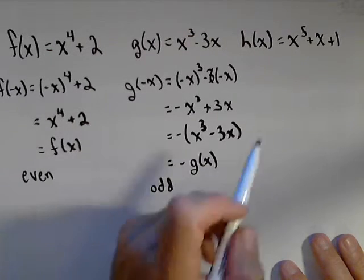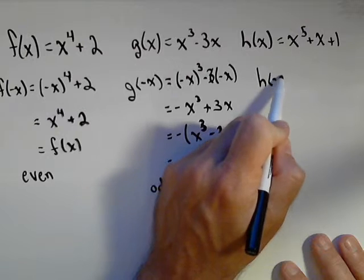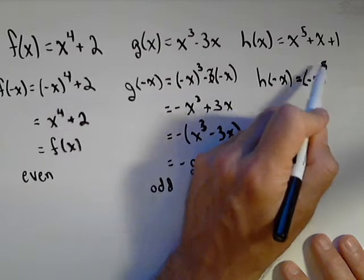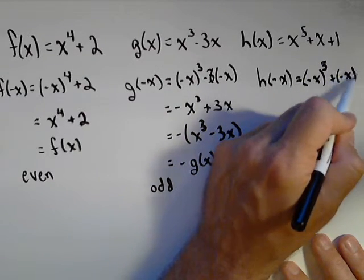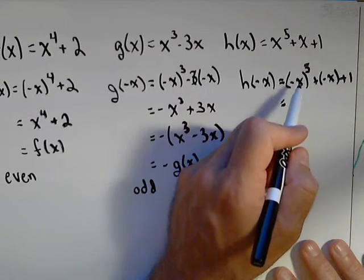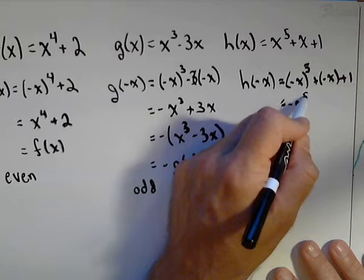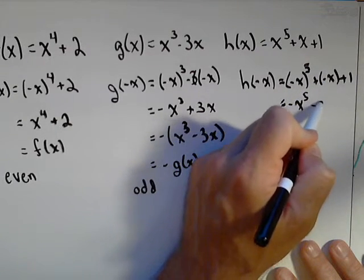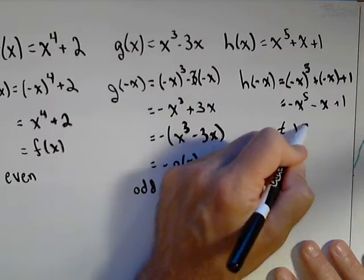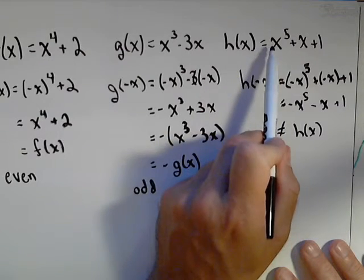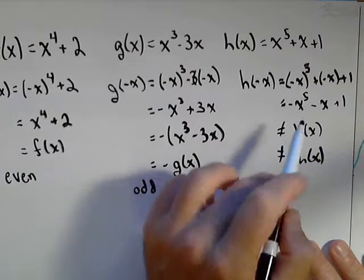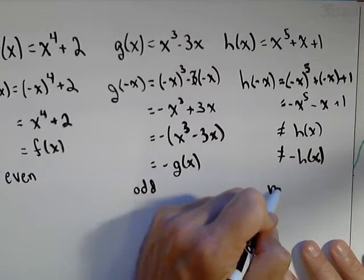Finally, for the last function, we start the same way. We calculate h of negative x. You might be starting to see a relationship here—we'll talk about it at the end. Negative x to the fifth plus negative x plus 1. The odd exponent means negative x raised to the fifth will still be negative x to the fifth, minus x plus 1. This is not equal to h of x. Only two of the signs switch, not all three, so it's also not equal to negative h of x. It's not even, it's not odd, therefore it's neither.